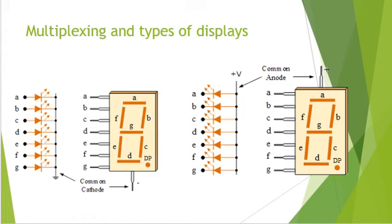The individual segments are illuminated by application of a HIGH or logic 1 signal via a current limiting resistor to forward bias the individual anode terminals. In the common anode type, all the anode connections of the LED segments are joined together to logic 1, and individual segments are illuminated by applying a logic 0 or low signal via a suitable current limiting resistor to the cathode of the particular segment. We generally prefer the common anode type as it can source a higher current.